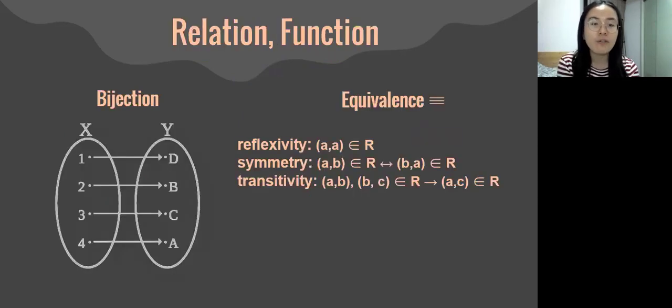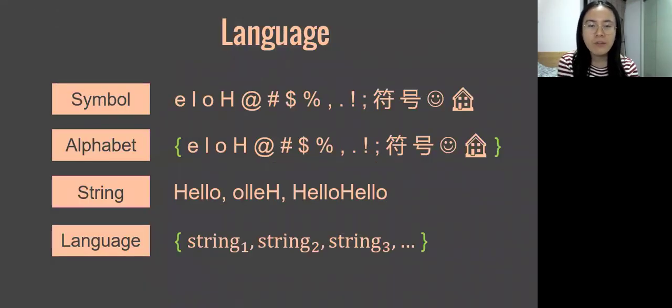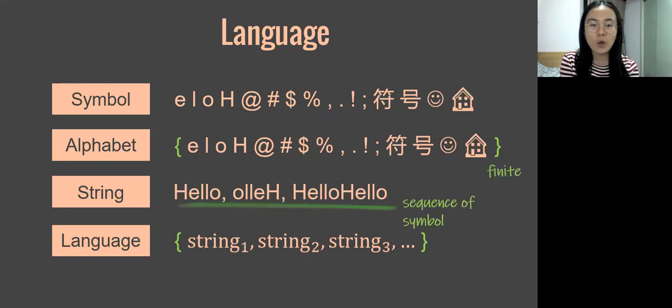This leads to the definition of relations and functions, especially bijections and equivalence relations. A language is a set of strings under certain restrictions. A string is a finite sequence of symbols, and we call the set of all possible symbols an alphabet.